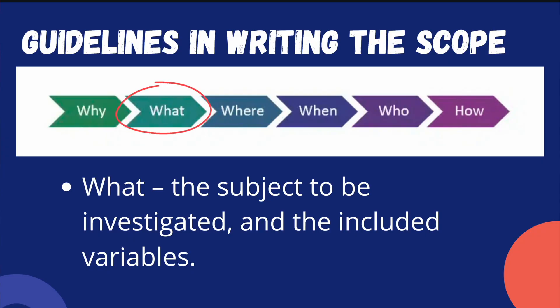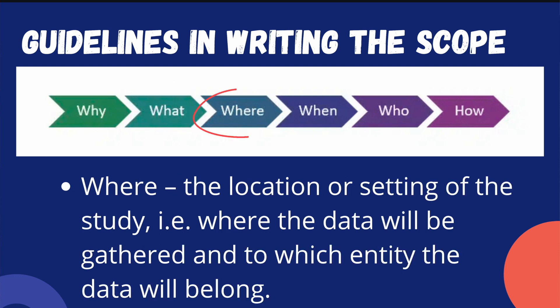Next is WHAT — what are the subjects to be investigated and what are the included variables? Next is WHERE — where is the location or setting of the study? For example, where the data will be gathered and to which entity the data will belong. You have to mention the specific place where you are going to conduct your study.